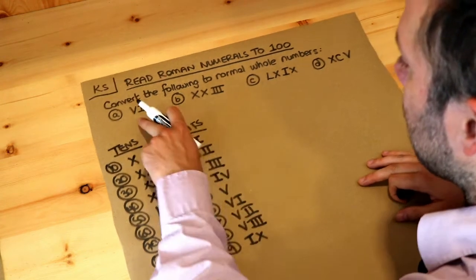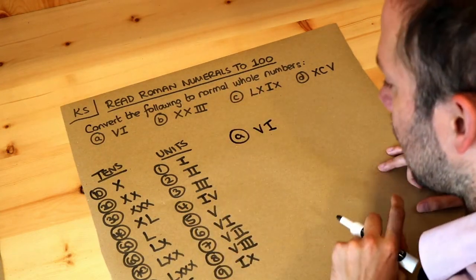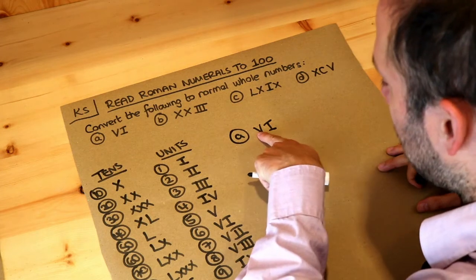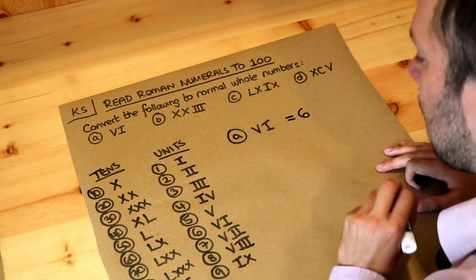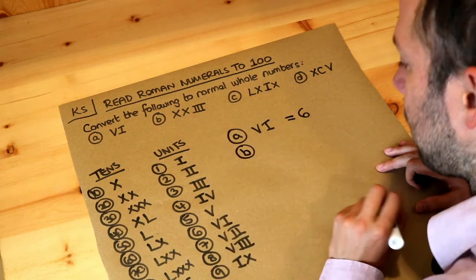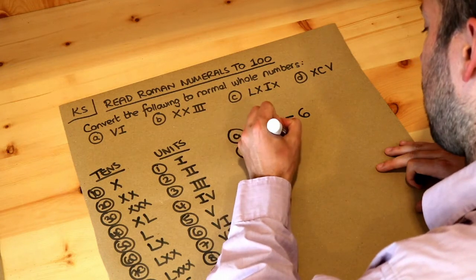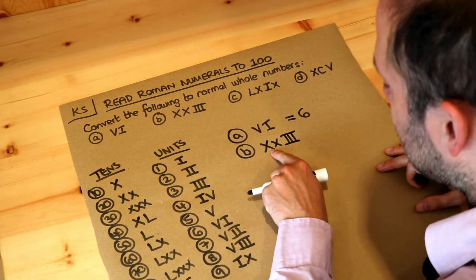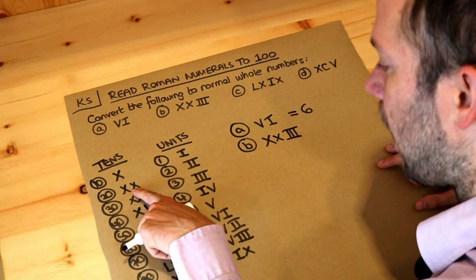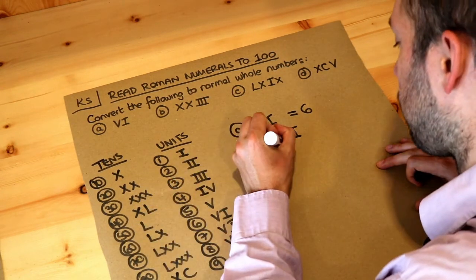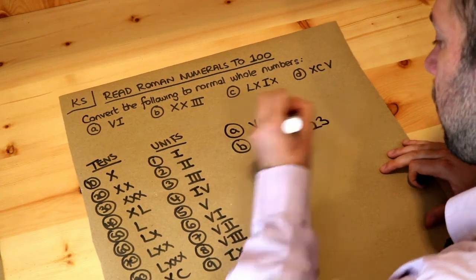Now let's put these together to convert some numbers. Take vi: v is to do with units — it's five — and i is one. We can see that just means six. It doesn't have any tens digit; it's just units and it's six. What about xxiii? Well, x is ten, and we've got xx to mean twenty. So we've got twenty, and then iii means three. So that is twenty-three.